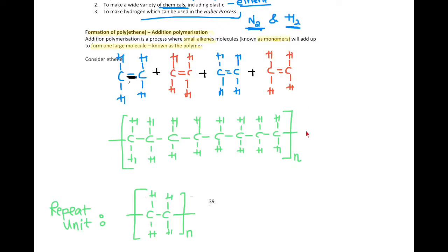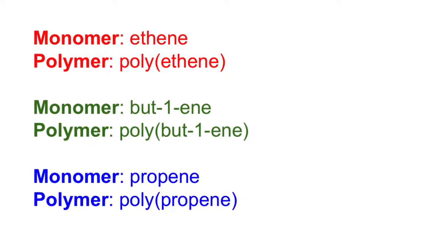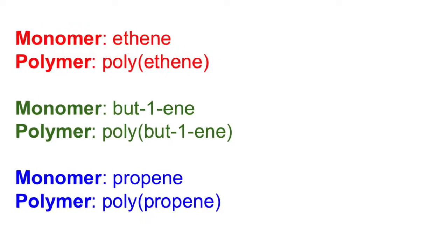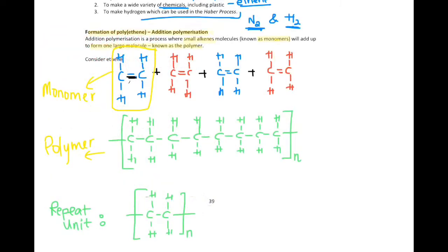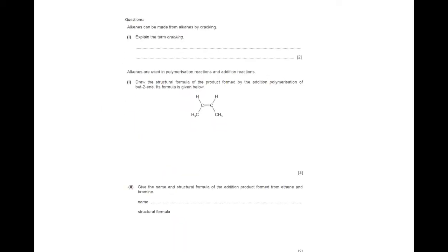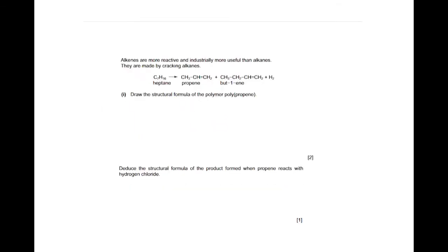So here you have the monomer, here you have the polymer, and here you have the repeat unit. You can see how the name of the polymer is obtained from the name of the monomer. That's the end of the alkenes part two — now work out the questions for the rest of the unit.